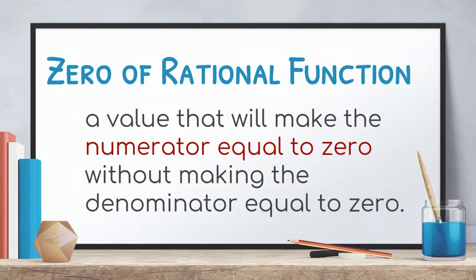Therefore, we define zero of a rational function as a value that will make the numerator equal to zero without making the denominator equal to zero. Meaning, the zero or zeros of a rational function are the value or values of x that will make the numerator equal to zero, but will not make the denominator equal to zero.